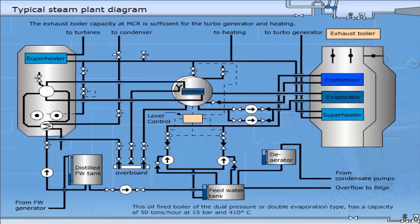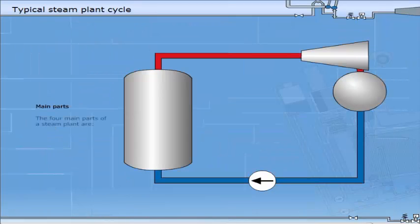The oil-fired boiler of the dual pressure, or double evaporation type, has a capacity of 50 tonnes per hour at 15 bar and 410 degrees centigrade.